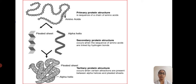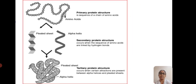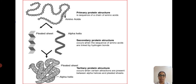Let us see how exactly the amino acids are arranged in the polypeptide chain. The chain of amino acids making the polypeptide is the primary structure. The pleated sheet and alpha helical structure are the secondary protein structures. They occur when the sequence of amino acids are linked by hydrogen bonds. The important functional protein structure in case of enzymes occurs when certain attractions are present between alpha helices and also the pleated sheets.